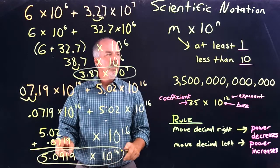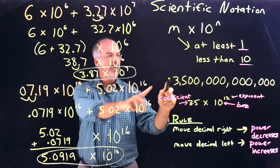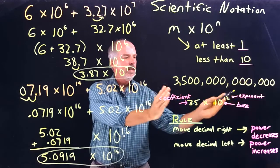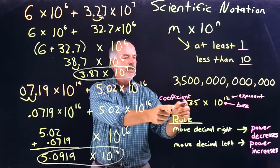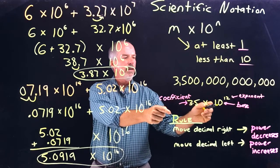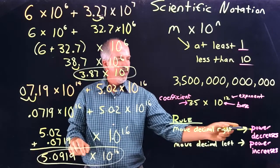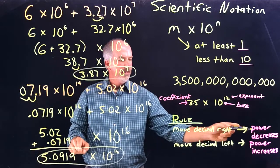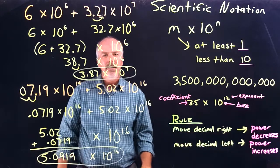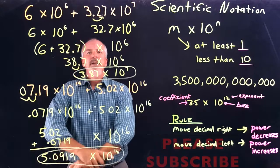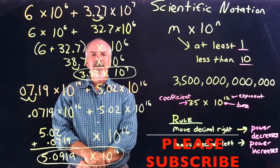Quick review: scientific notation is a way to take a very large number and write it shorthand using two factors — a coefficient times the power of 10. If we move the decimal to the right, the power decreases; if we move the decimal to the left, the power increases. Thanks for watching, please subscribe if you haven't already, and we'll see you on the next video.